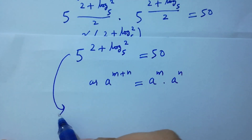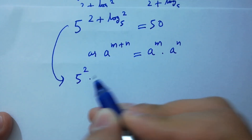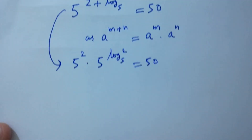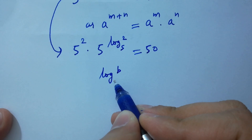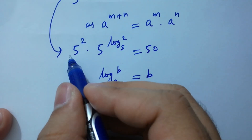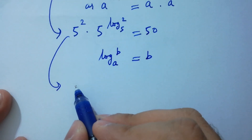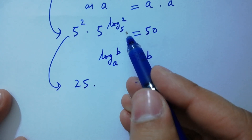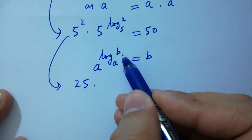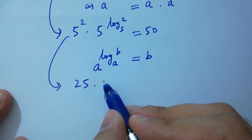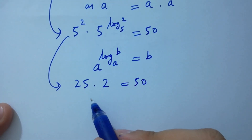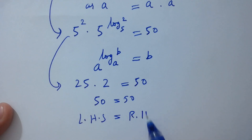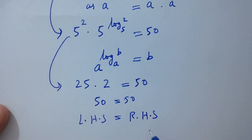Using the rule a to the power m plus n equals a to the power m times a to the power n, we have 5 to the power 2 times 5 to the power log 2 to the base 5 equals 50. That gives 25 times 5 to the power log 2 to the base 5. Since 5 to the power log base 5 of 2 equals 2, we have 25 times 2 equals 50, which equals 50. Left hand side equals right hand side, which verifies the equation.